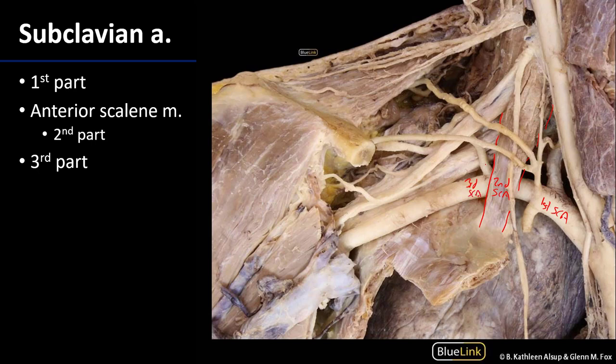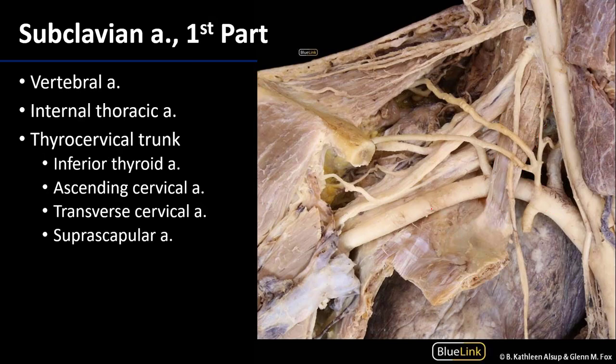The subclavian artery ends at approximately the lateral margin of the first rib; everything beyond that is the axillary artery, which eventually becomes continuous with the brachial artery. Now let's look at the branches of each part of the subclavian artery.